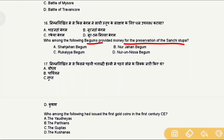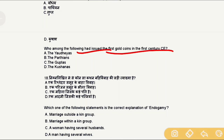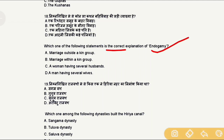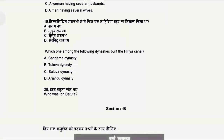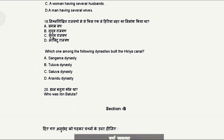Question 16: Which begum provided money for the preservation of the Sanchi Stupa? The answer is option A, Shah Jahan Begum. Question 17: Who issued the first gold coins in the first century CE? The answer is option D, the Kushana rulers. Question 18: Which statement correctly explains endogamy? The answer is option B, marriage within a kin group. Question 19: Which dynasty built the Hiriya Canal? The answer is option A, the Sangama dynasty. Question 20: Who was Ibn Battuta? He was a Moroccan traveler. With this, Section A is complete.